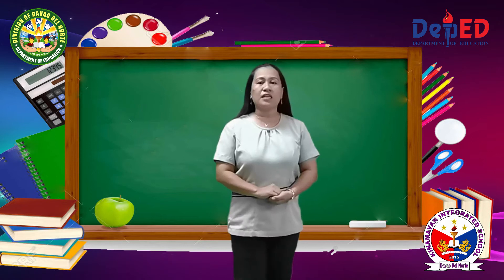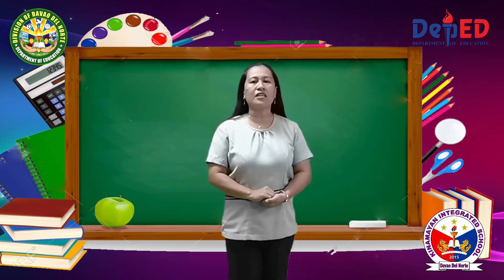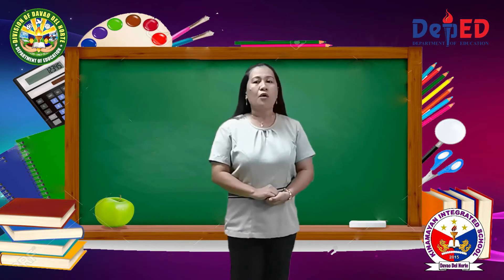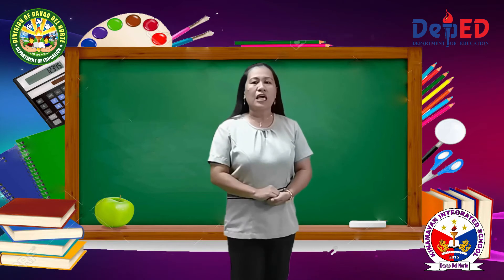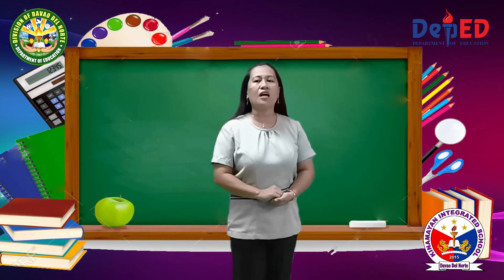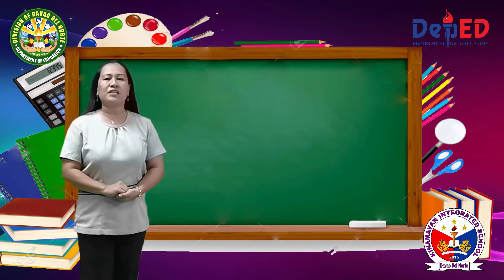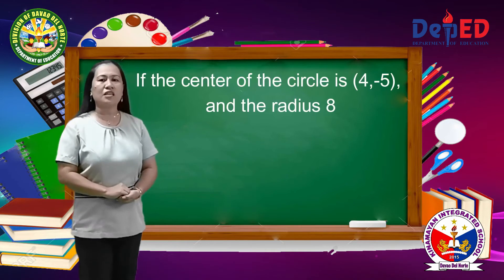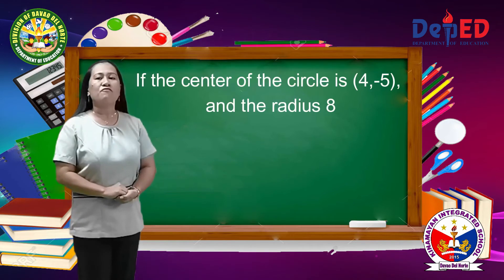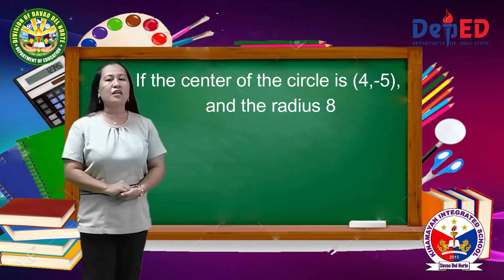Since we can determine the center and the radius of a circle given the equation, we can also find the equation if the center and the radius are given. Example: if the center of the circle is (4, negative 5) and the radius is 8,